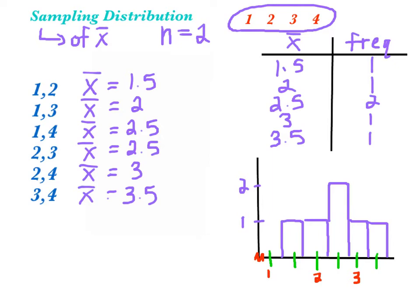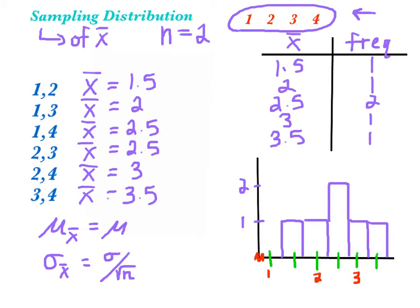On the AP formula sheet, you're given two formulas for sampling distributions: the mean of x-bar and the standard deviation of x-bar. The mean of x-bar is always equal to the true mean, meaning the mean of the sampling distribution equals the mean of the population. The standard deviation is always equal to the standard deviation over the square root of n.